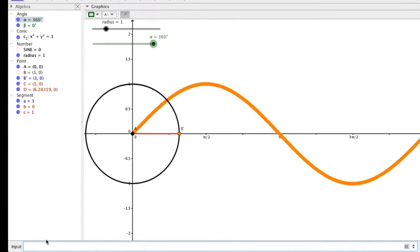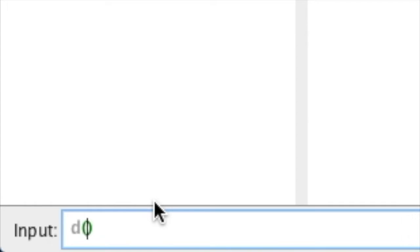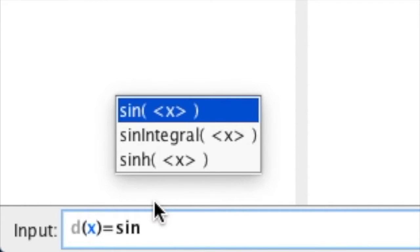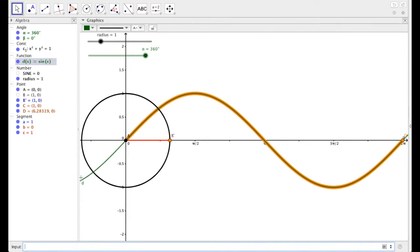So let's input our function of just sine of x. So instead of f of x, because our point is d, let's use d of x. So d open parenthesis, x close parenthesis. So I'm defining d of x to be sine. This is lowercase sin. Notice when you type in lowercase sin, GeoGebra goes, oh, I know what that is. So I'm going to input just x. And hit enter.